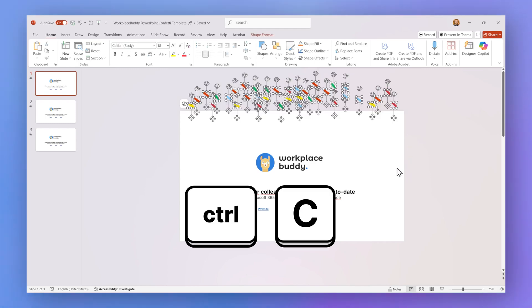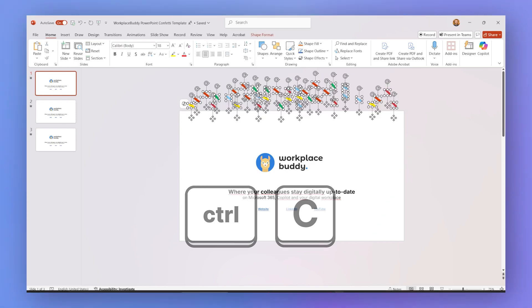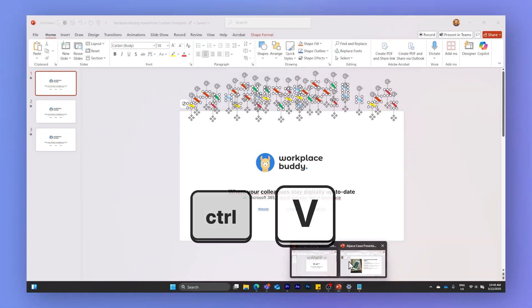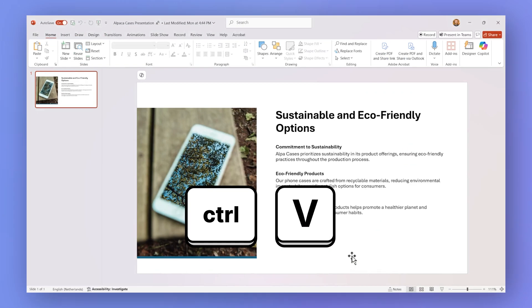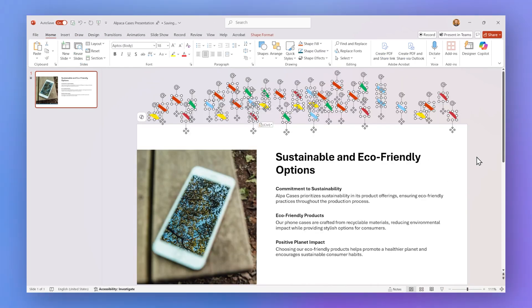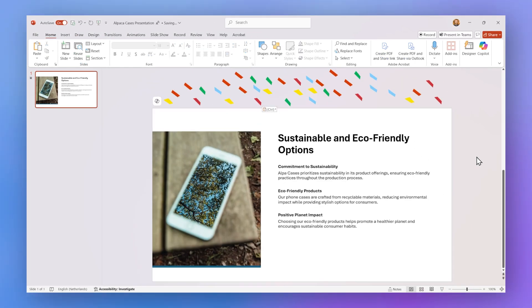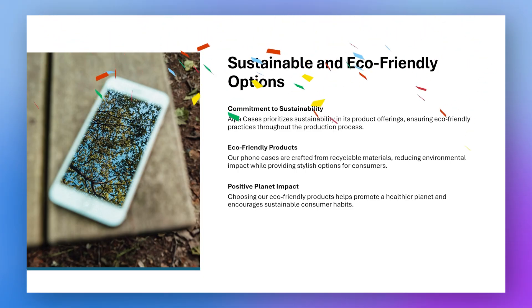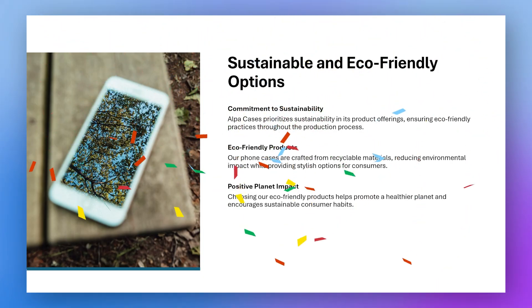Now go to the presentation where you want to add the confetti and press Ctrl+V. You don't have to adjust anything — the confetti will automatically be copied into the right position. And if I click on the slideshow button, you'll now see the newly added confetti.